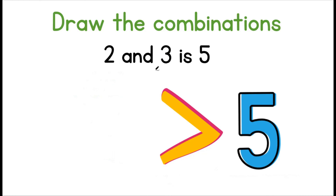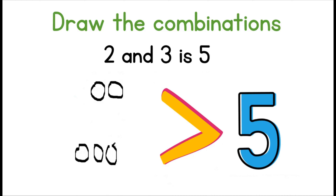Two and three is five. We draw one circle, two circles, then one circle, two circles, three circles. Let us count them together: one, two, three, four, five. This means that two and three is five.